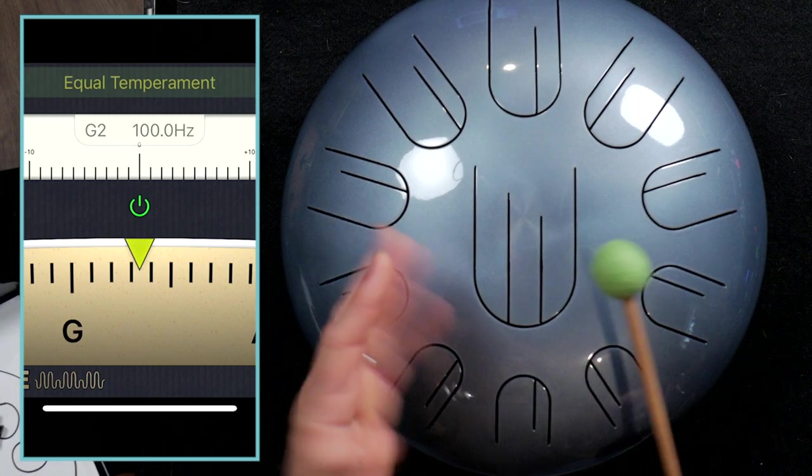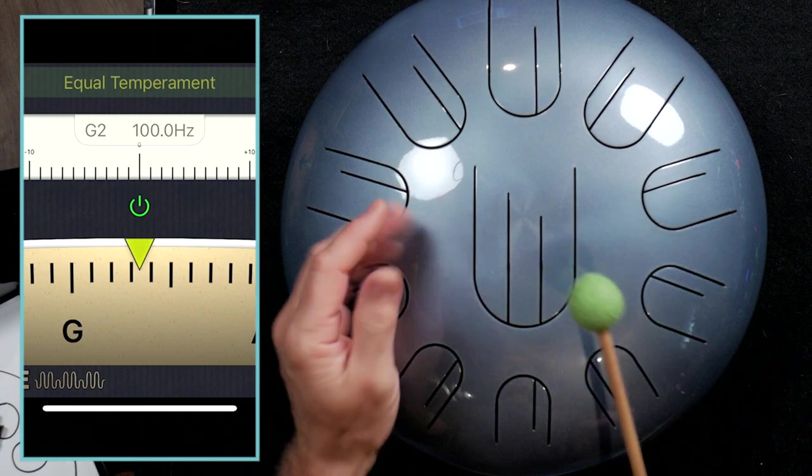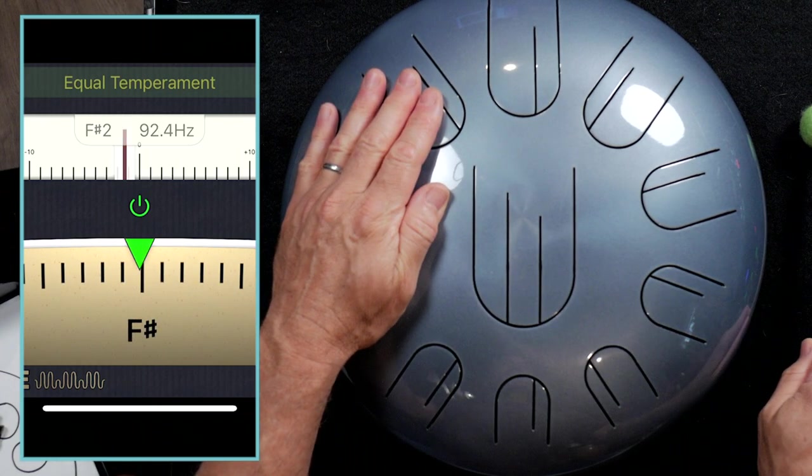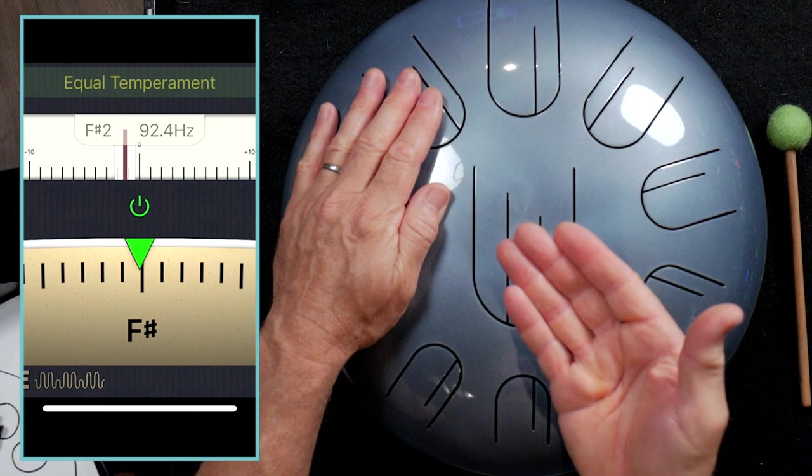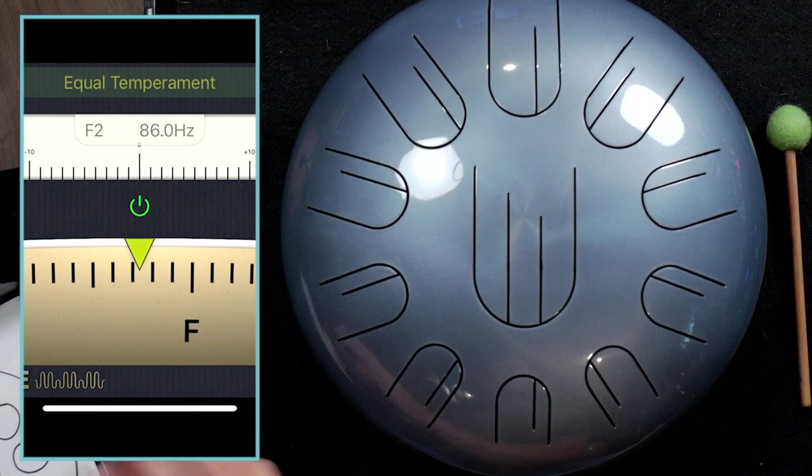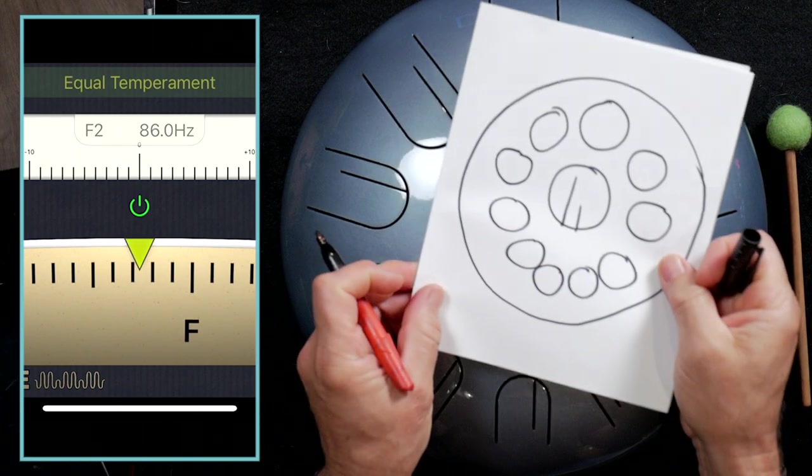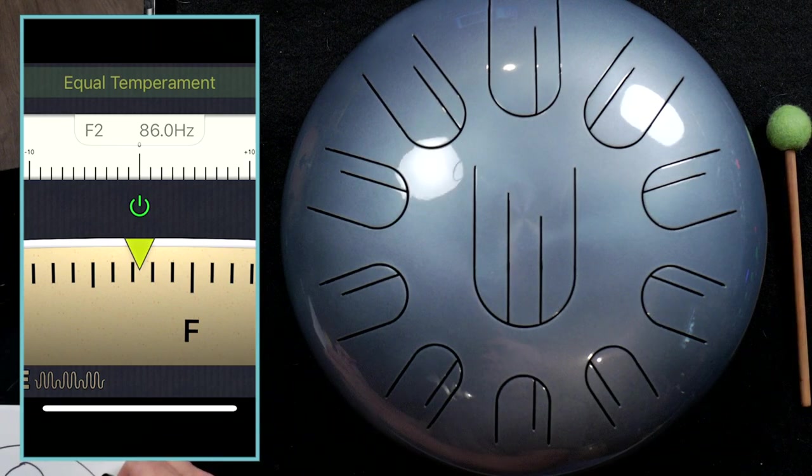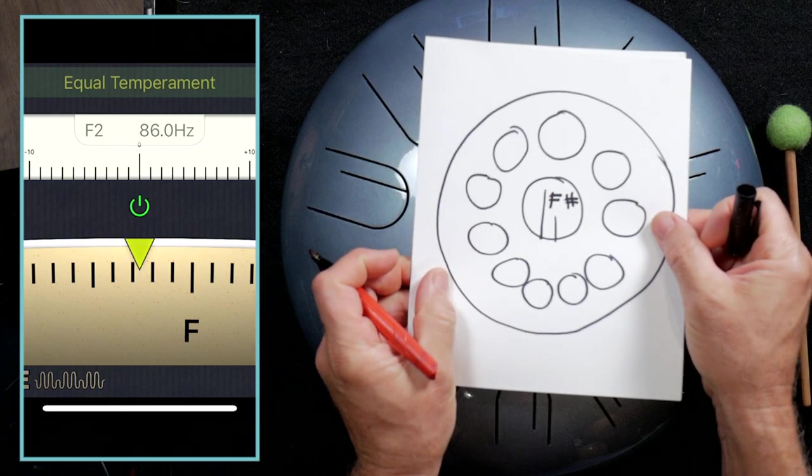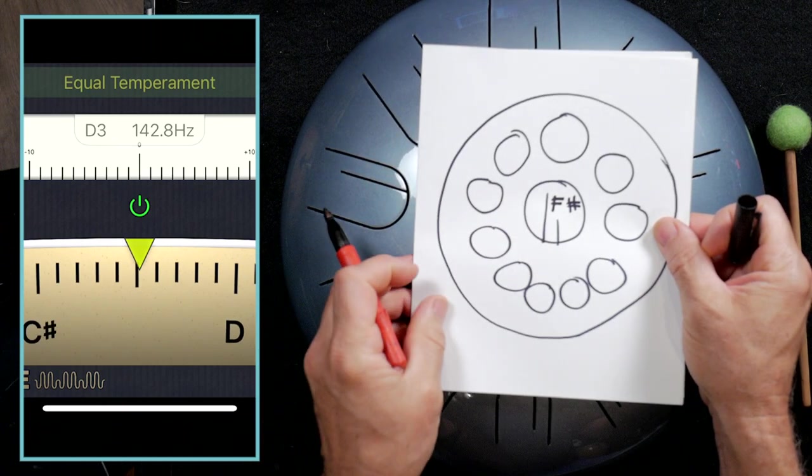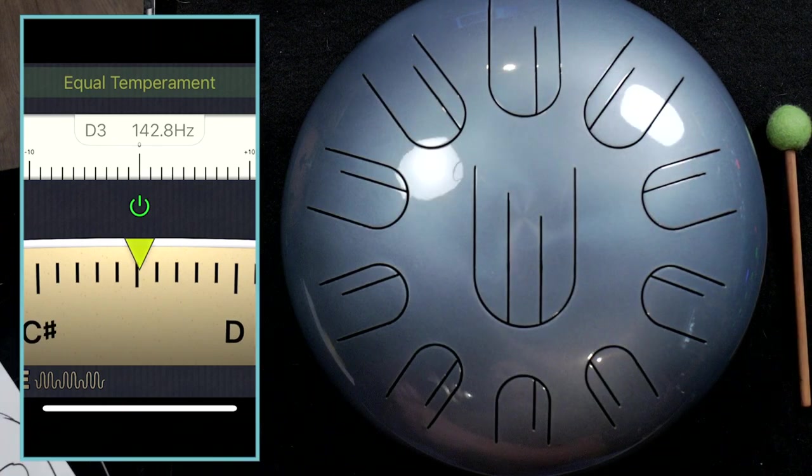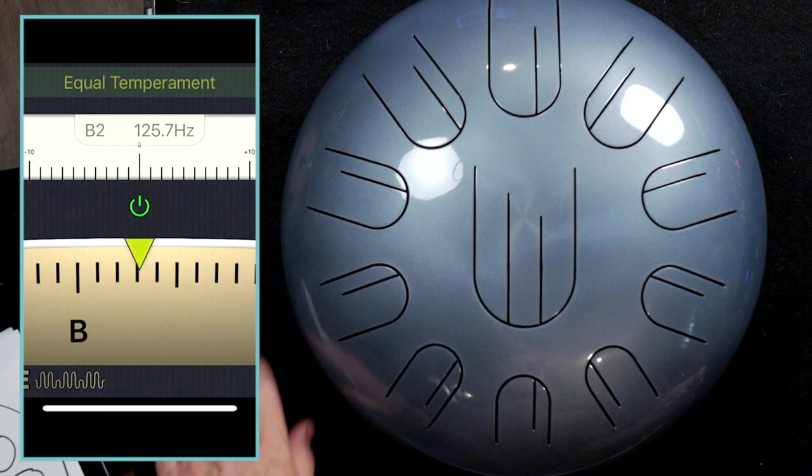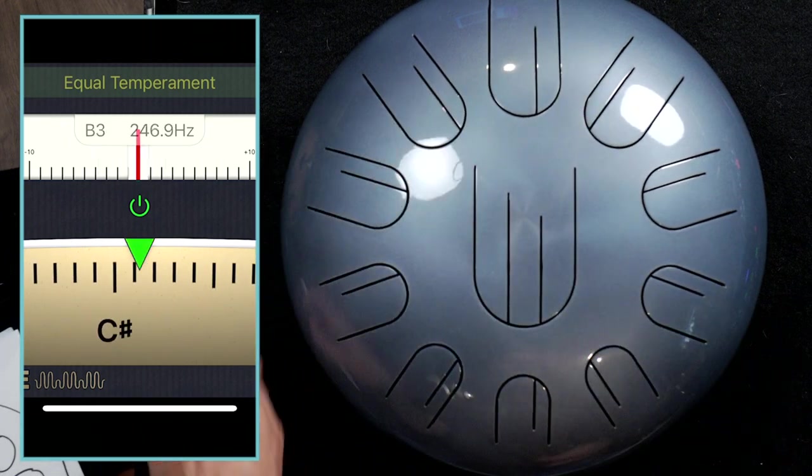So what I'm going to do here is just, let's start at the bottom. Let's start with the lowest note and play the note. There's the pitch, F sharp. So I'm going to write F sharp right there in the middle. And let's keep going. And I'm going to go through this whole instrument right now. We can go quick.